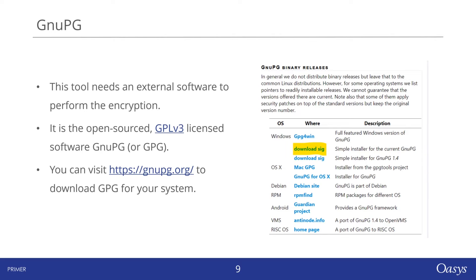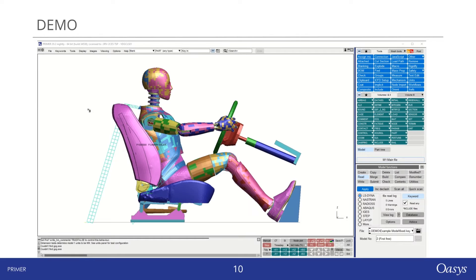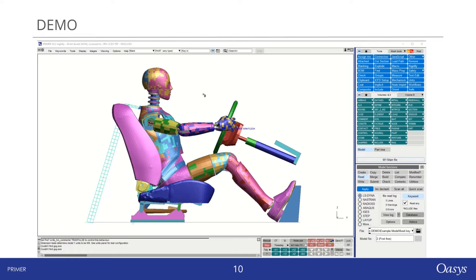In this demo, I will guide you through the process of setting up the encryption tool in OASIS Primer, assuming you have already downloaded the GPG executable. If you require assistance locating the correct GPG executable, please contact DynaSupport or remain here until the end where I will answer questions. First, you will need to load a model into Primer. I have loaded a dummy model of a vehicle occupant.